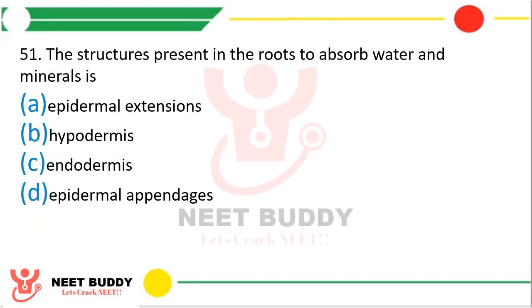Question number 51. The structures present in the root to absorb water and minerals are: epidermal extensions, hypodermis, endodermis, or epidermal appendages? The correct answer is option A — epidermal extensions.